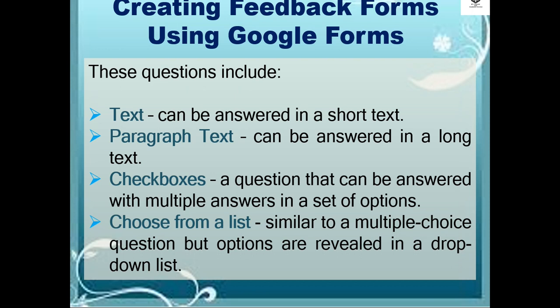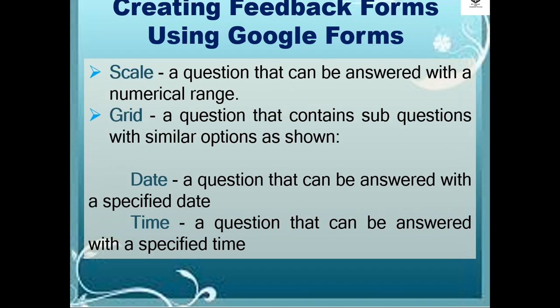Paragraph text can be answered in a long text. Checkboxes are questions that can be answered with multiple answers in a set of options. Then choose from a list, which is similar to a multiple choice question but options are revealed in a drop-down list. Scale — a question that can be answered with a numerical range. Grid — a question that contains sub-questions with similar options. Date — a question that can be answered with a specific date. And time — a question that can be answered with a specified time.